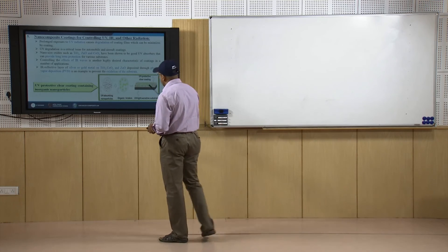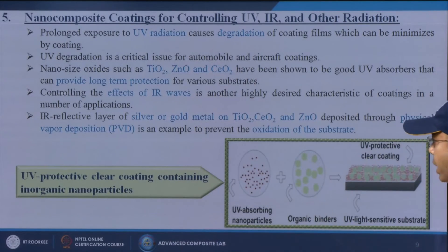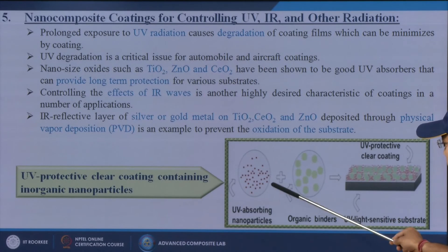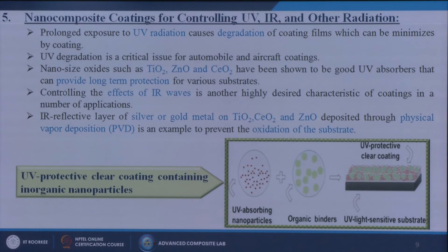Here is an example of a UV-protective clear coating containing inorganic nanoparticles. UV-absorbing nanoparticles are combined with organic binders, and through those binders the coating is applied onto the substrate, making UV-light-sensitive substrates that can absorb UV light.